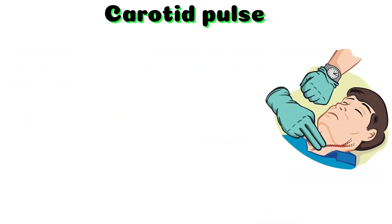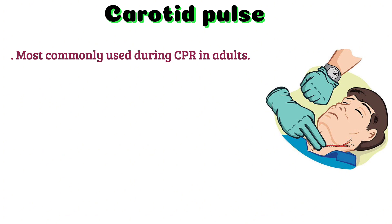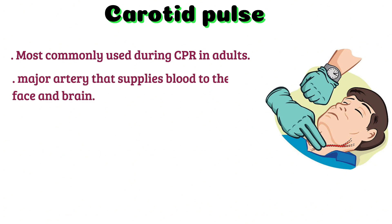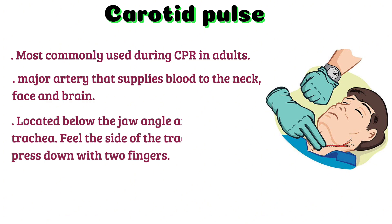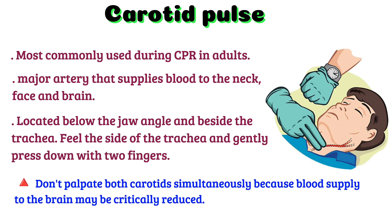Carotid pulse: this site is most commonly used during CPR in an adult as a pulse check site. It is a major artery that supplies blood to the neck, face, and brain. It is located below the jaw angle and beside the trachea — feel the side of the trachea and gently press down with two fingers. Do not palpate both carotid arteries simultaneously, because blood supply to the brain may be critically reduced.